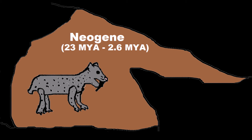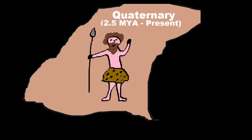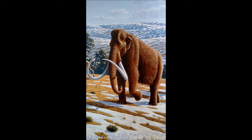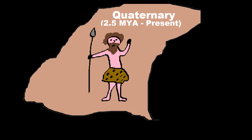Next came the Neogene. This is when the first ancestors of humans began to appear, and we're starting to get a little bit closer to modern day. And last but not least, we have the Quaternary Period — the current period we're living in, although there's debate about that. This is when the large Ice Age with the Woolly Mammoths happened, and it's considered by some as the period we live in now.